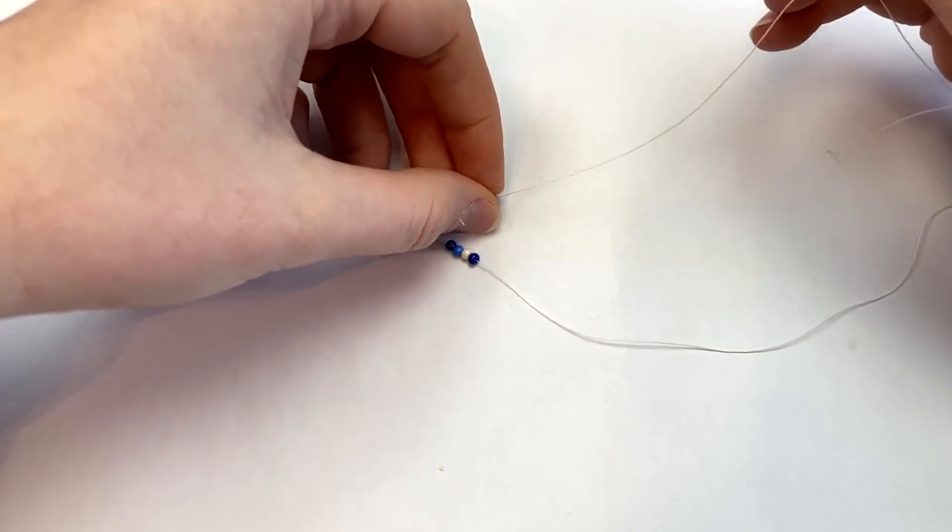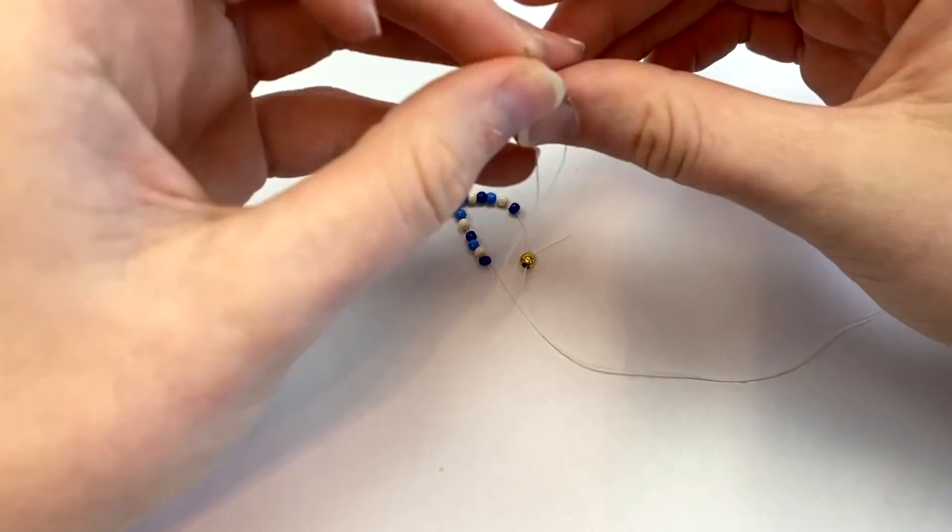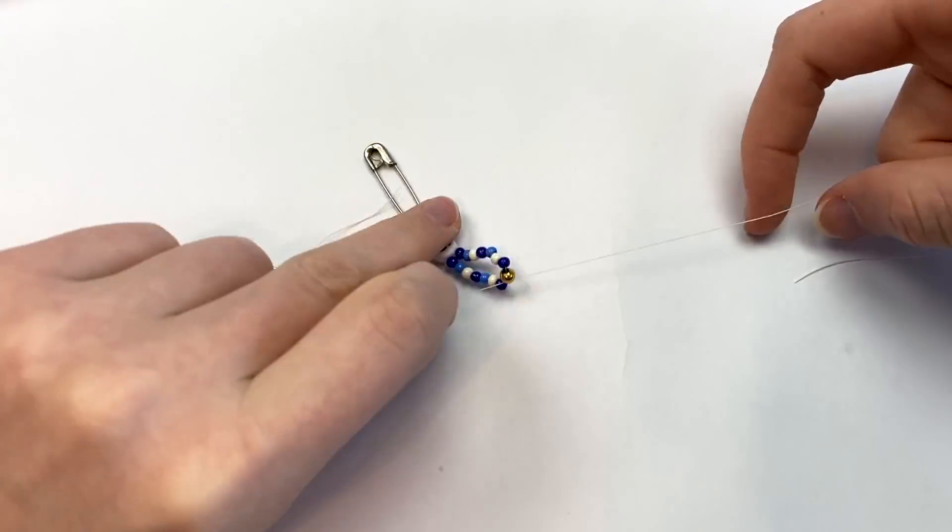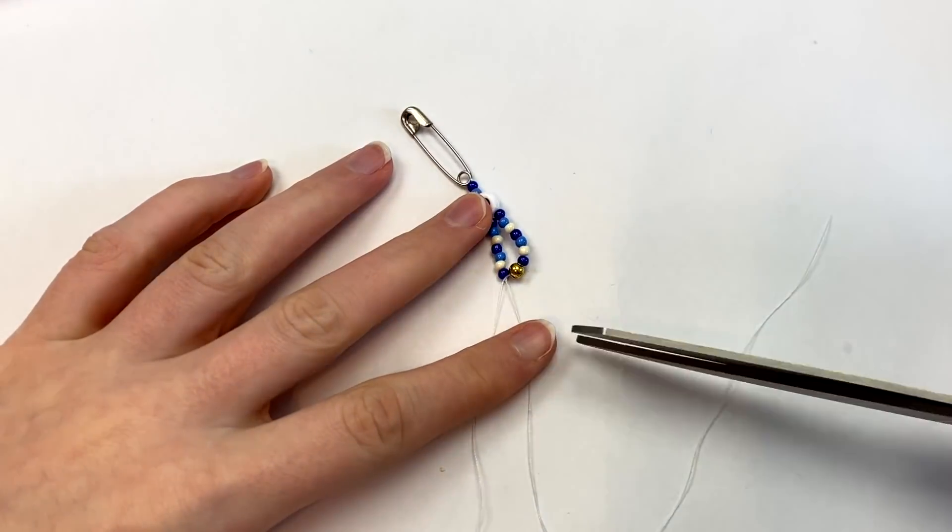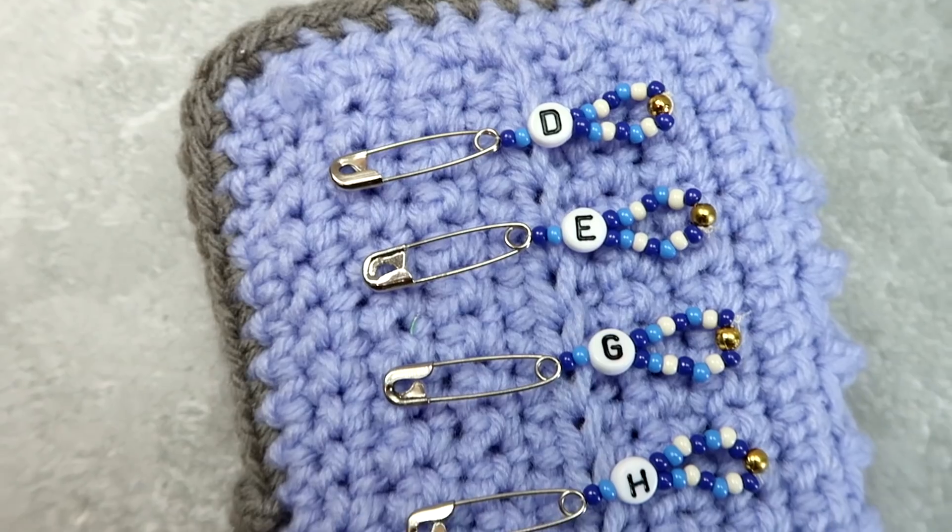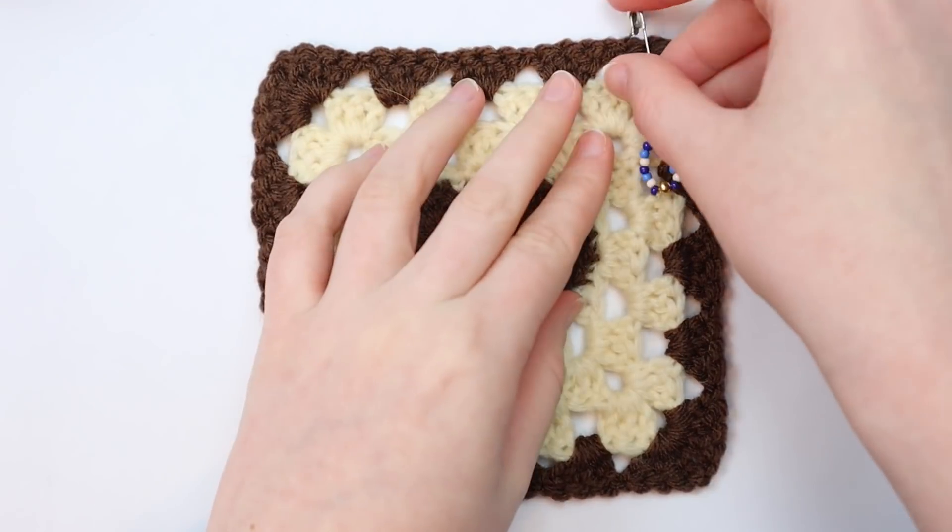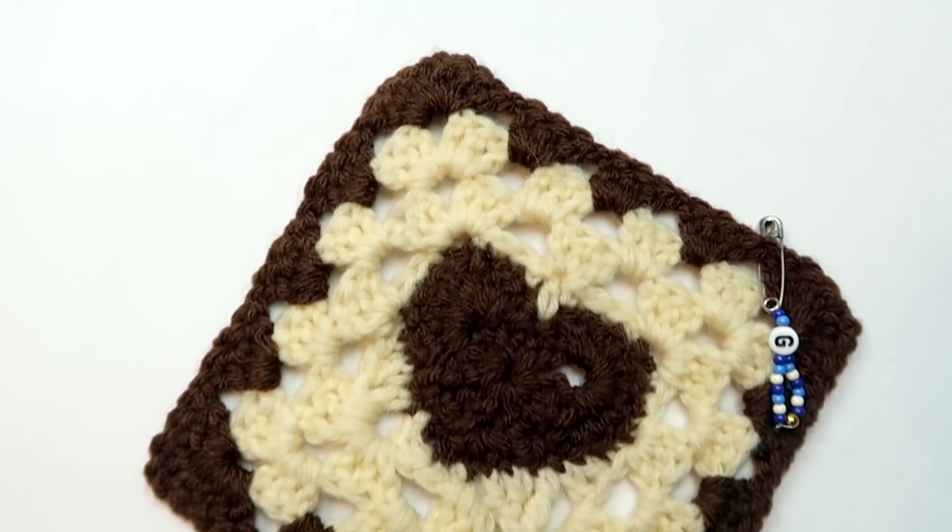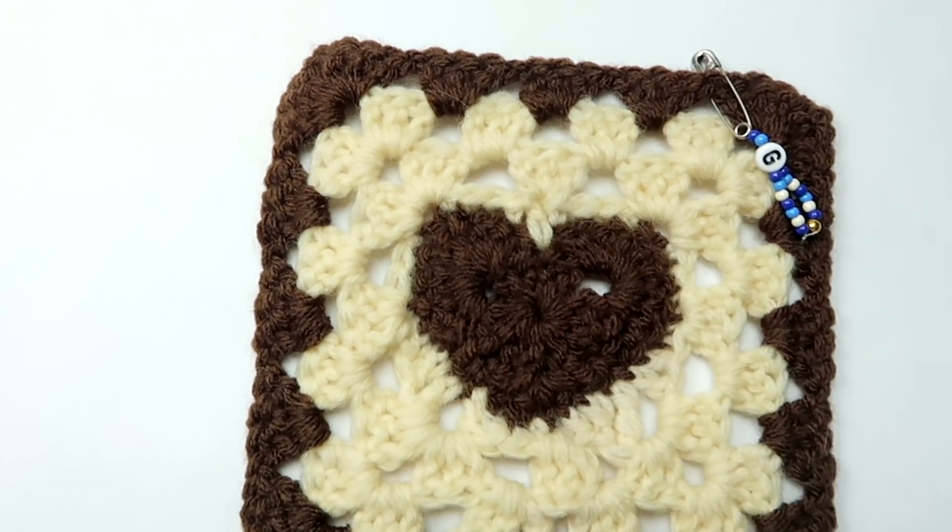To finish the stitch marker, I tied both strings together like this, and again I did a triple knot to secure it. Cut off the excess string and that's it. Repeat this as many times as you want. Like I said before, I made one for each hook that I have. I used one of my stitch markers to help me make this heart-shaped granny square. Eventually I want to make a bunch of these to turn into a tote bag. Which yes, my toxic trait is starting projects that I absolutely do not have time for.